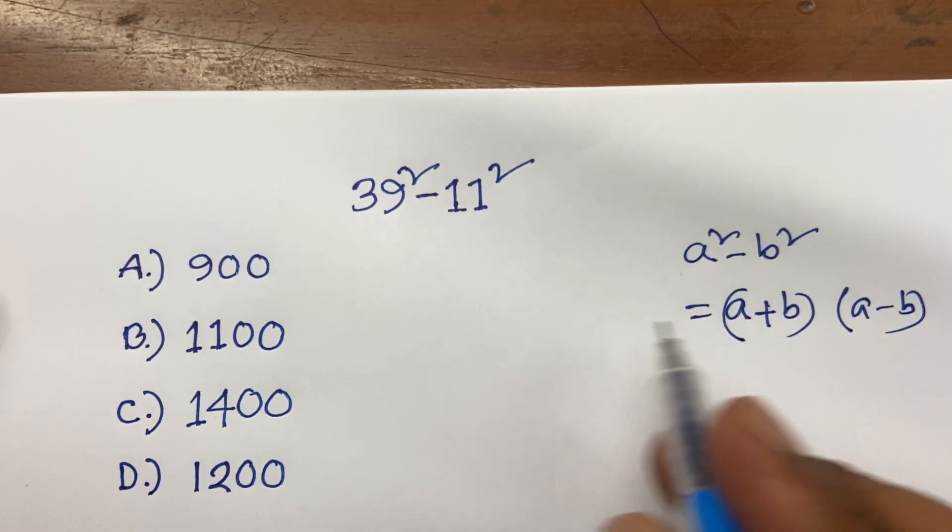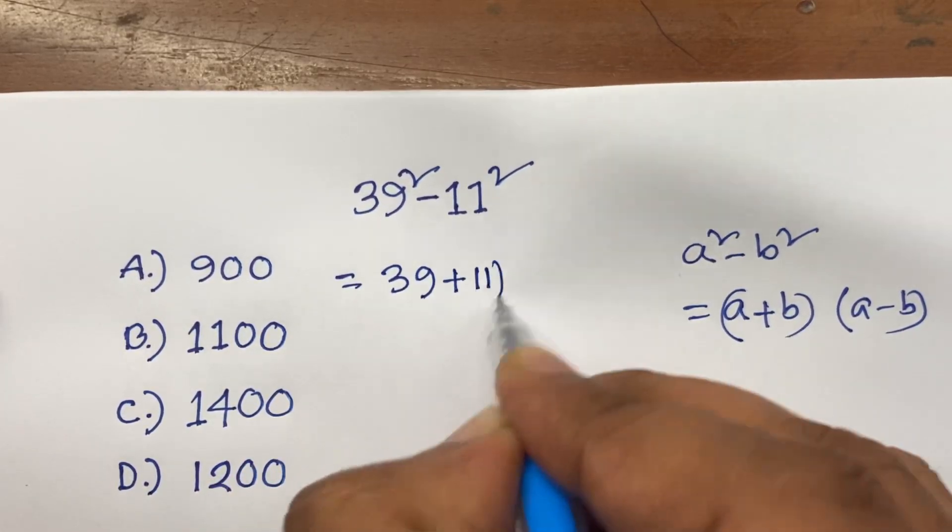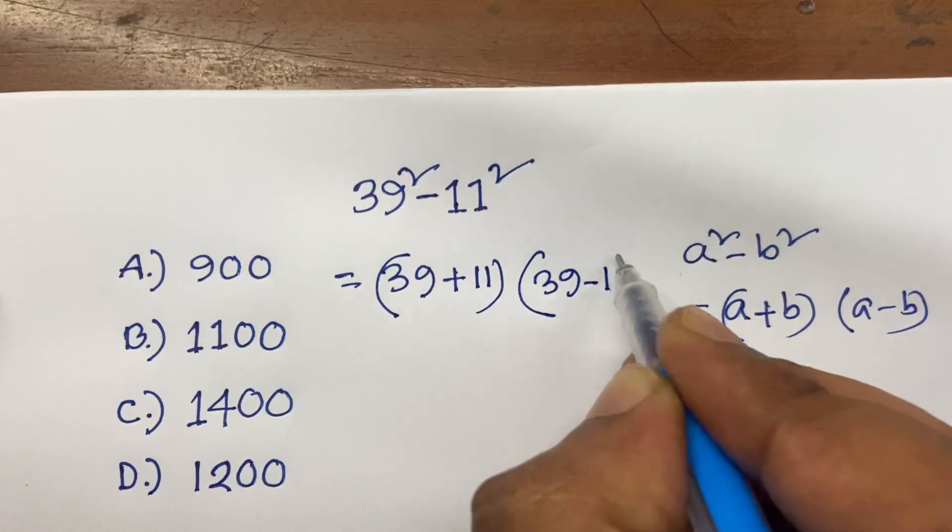If I follow this rule, I can say here is 39 plus 11 and here is 39 minus 11.